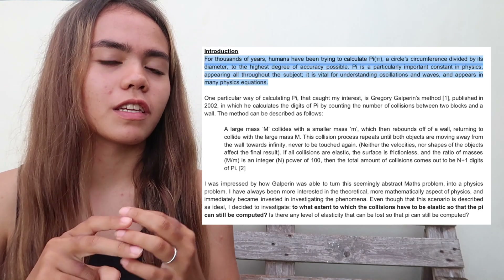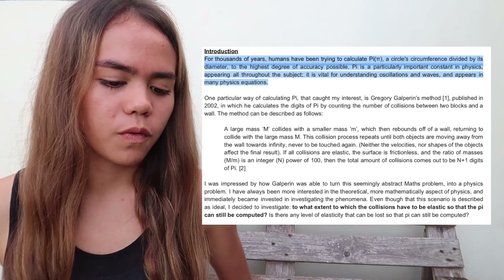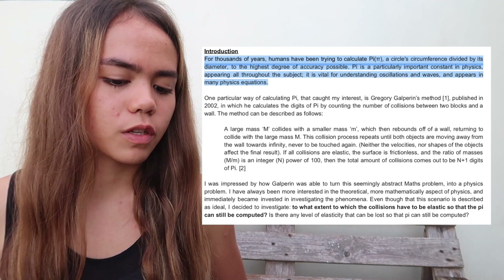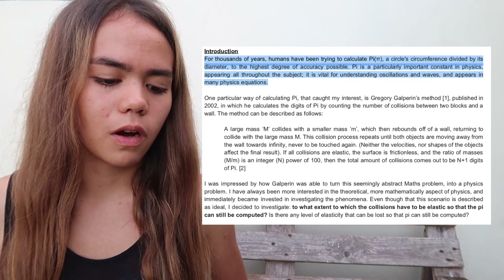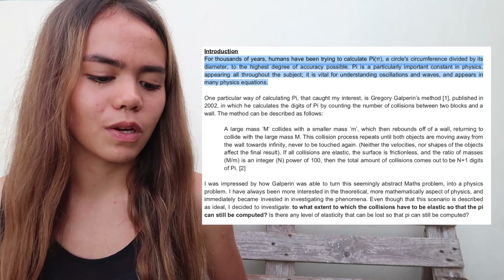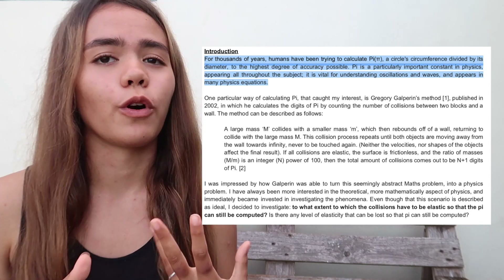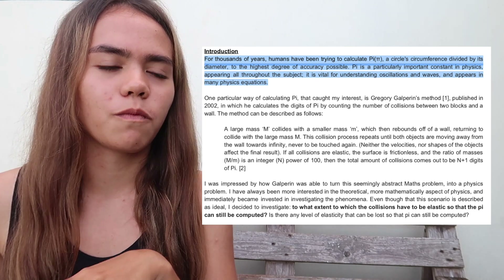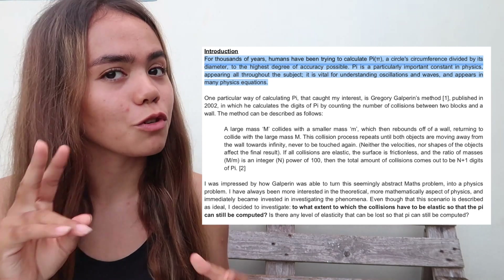It's quite simple: you start with a fun fact, move into a bit of theory, then go into your research question, explain why you chose it, and state your aim. To demonstrate, here's how I used this structure in my physics IA. I started off with a short paragraph as my interesting fact: 'For thousands of years, humans have been trying to calculate pi — a circle's circumference divided by its diameter — to the highest degree of accuracy possible. Pi is a particularly important constant in physics, appearing all throughout the subject. It is vital for understanding oscillations and waves and appears in many physics equations.' This anecdote about pi gives a great energetic start to the internal assessment.